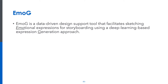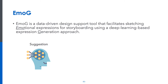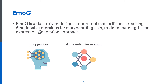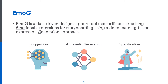In our work, we introduce Emoji, a data-driven design support tool that facilitates sketching emotional expressions for storyboarding, using a deep learning-based expression generation approach. As a user draws a neutral face of an intended character, Emoji can suggest potential character designs based on input strokes, and automatically generate new sketches of the character with six basic expressions. The system also allows the user to interactively specify the type and intensity of expression, the gender of the character, and viewing angle.